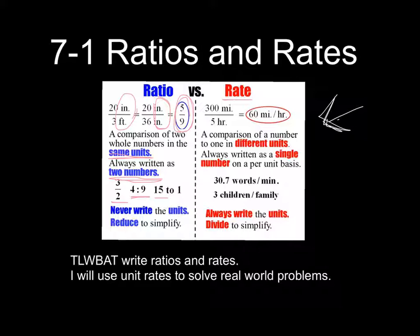Rates would be like a mile per hour or feet per second. We're going to have two different units in a rate. It's always written as a single number on a per unit basis. So I don't want to know I can go 300 miles in 5 hours. I want to know my speed for every hour, per hour. We're always going to write the units, whereas a ratio we're never going to write the units. For rates we're going to divide to simplify.